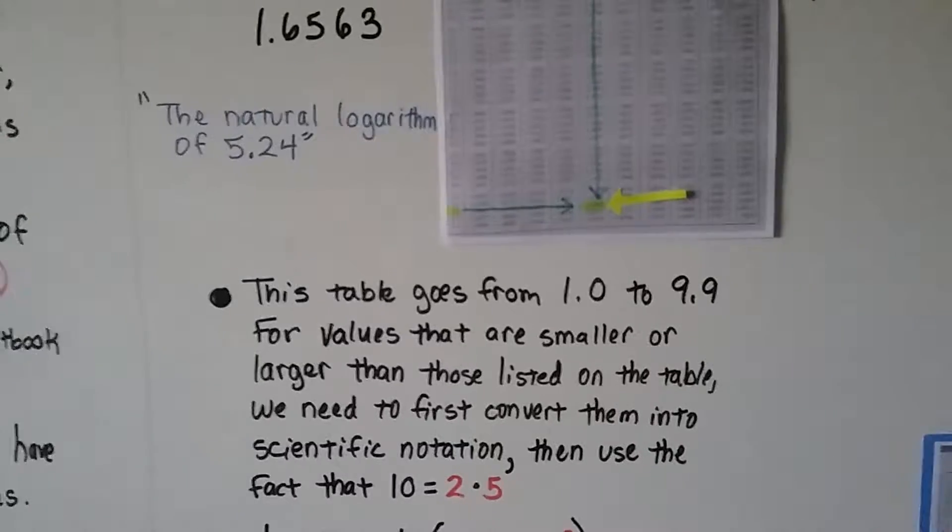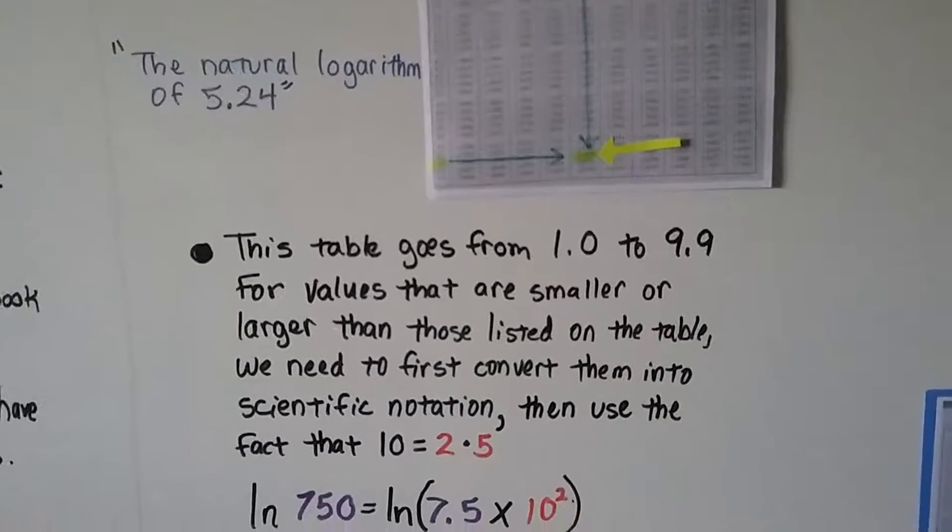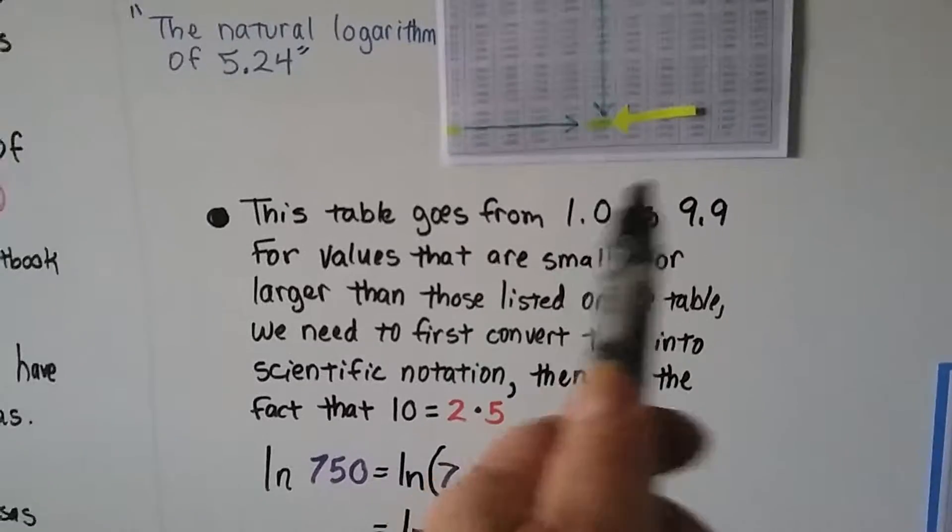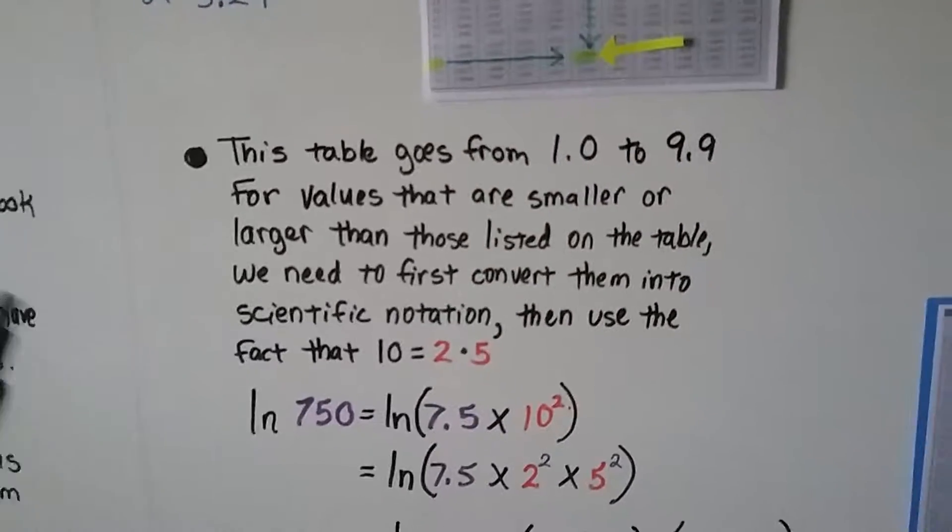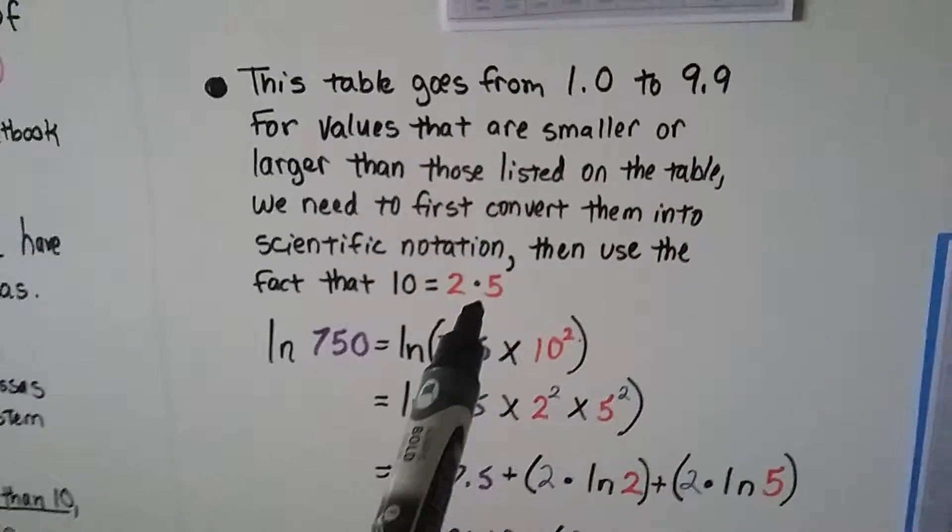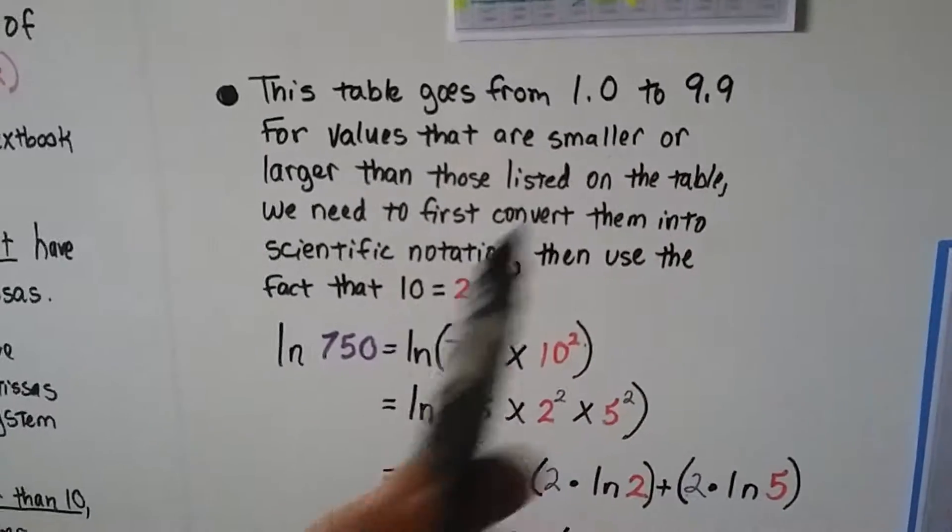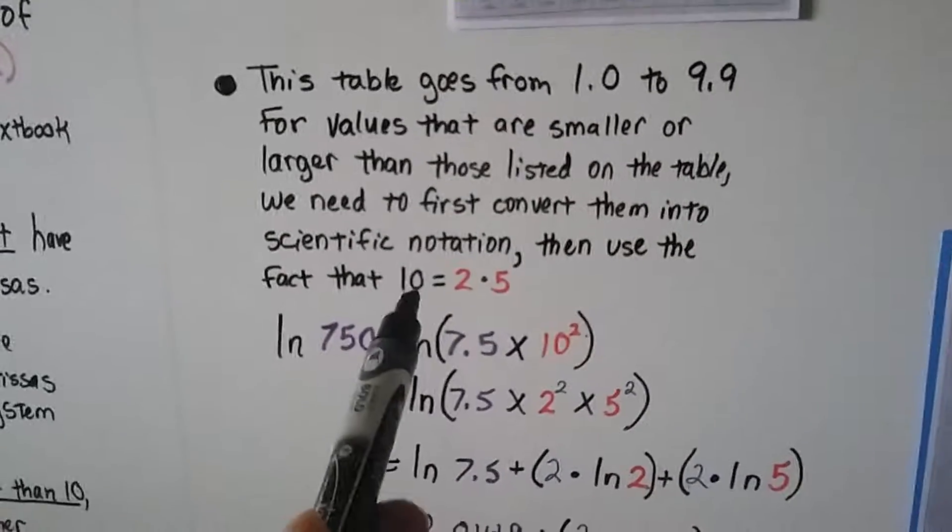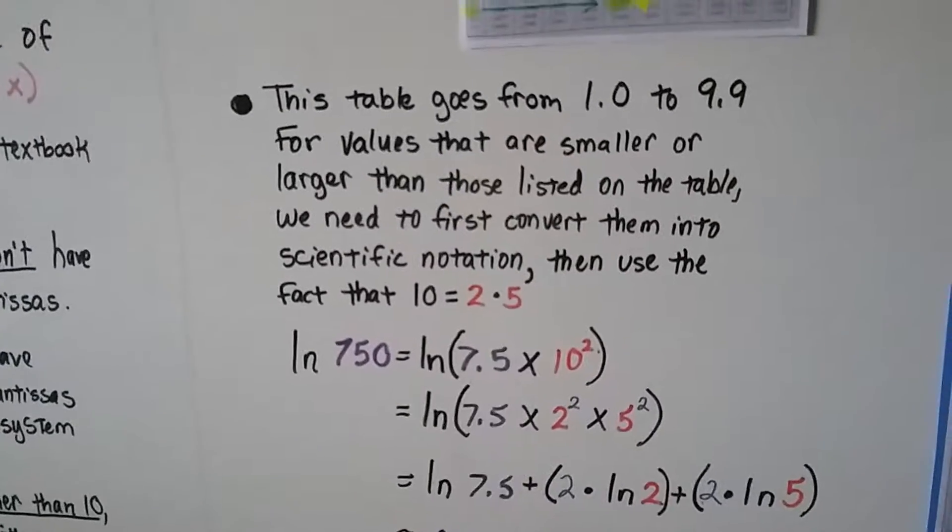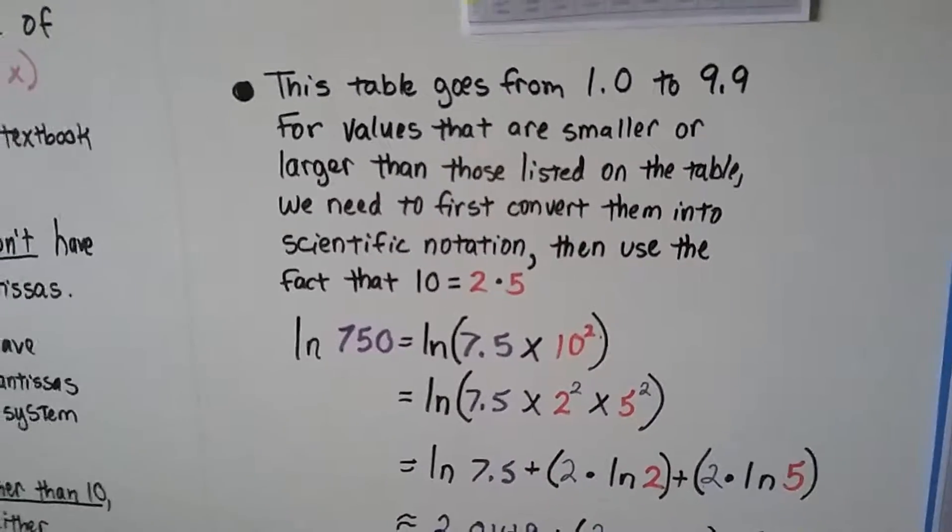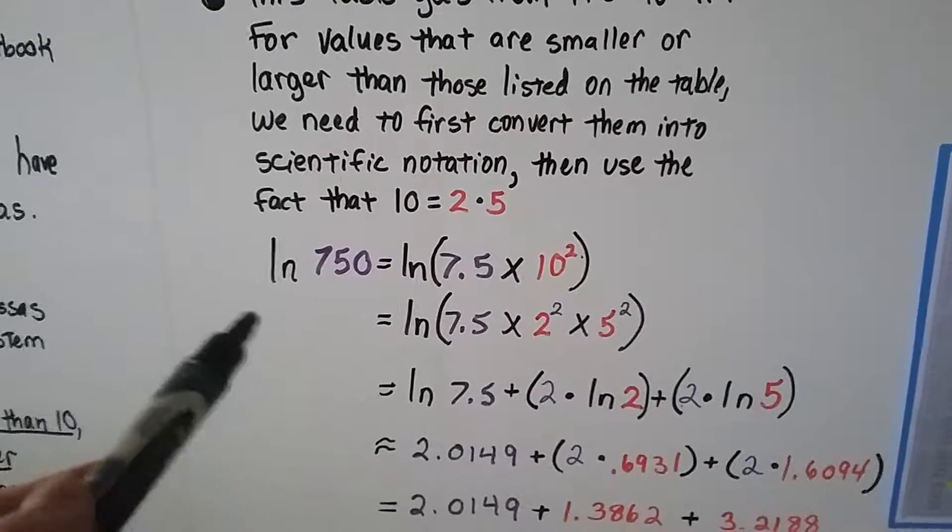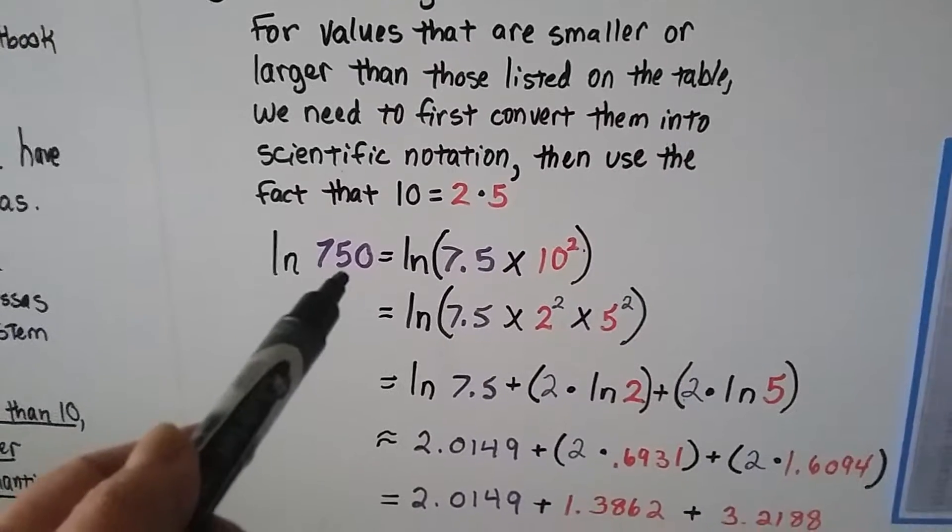This table goes from 1.0 to 9.9. For values that are smaller or larger that are not in the parameters of this, we need to first convert them into scientific notation and then use the fact that 10 equals 2 times 5, because it doesn't have a 10 on the table. If we break 10 into 2 times 5, we can find the natural log of 2 and the natural log of 5 on the table. We broke it into smaller increments that were on the table.